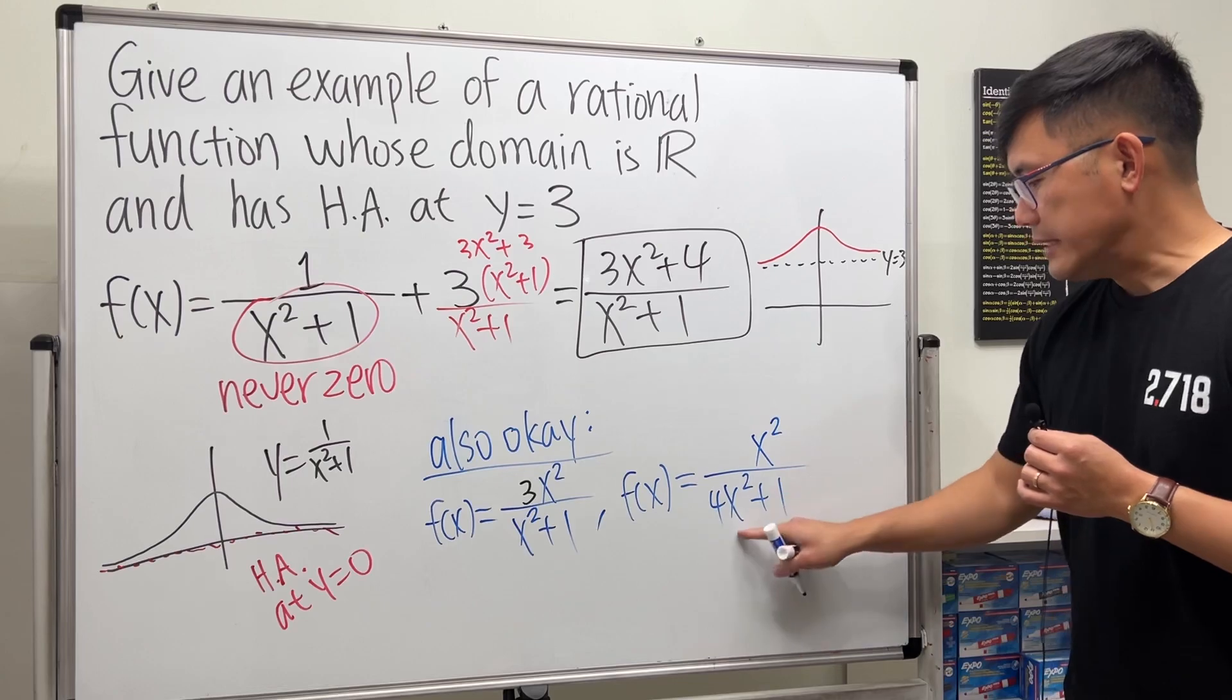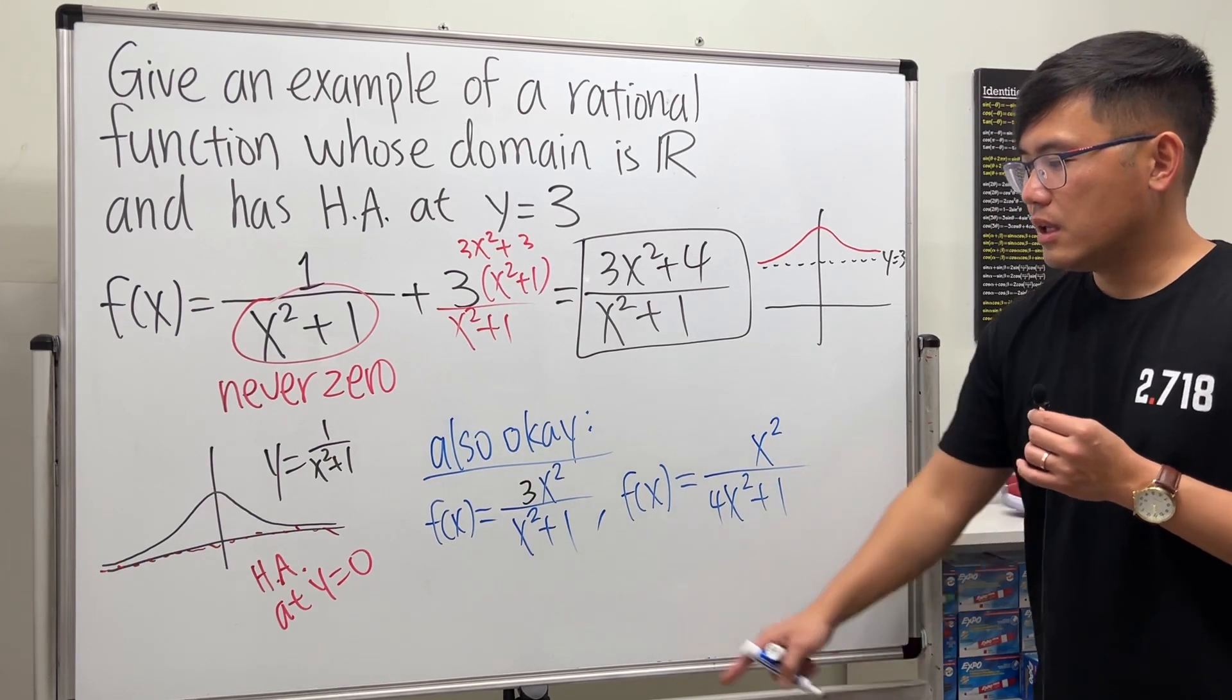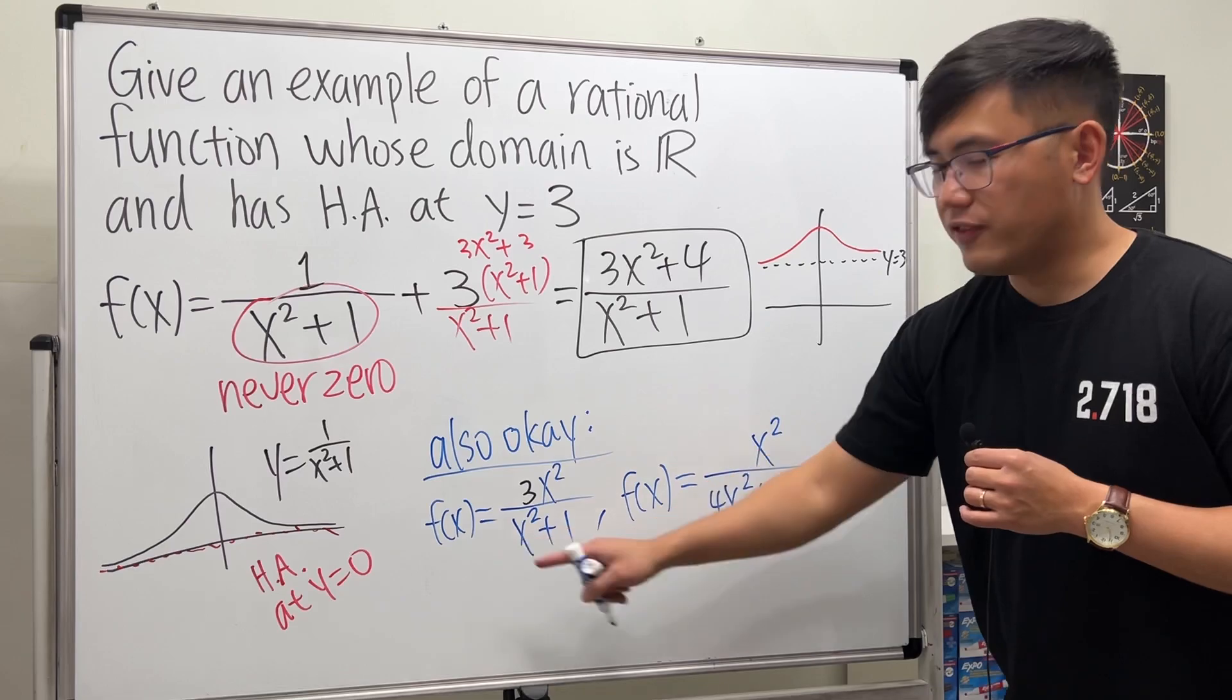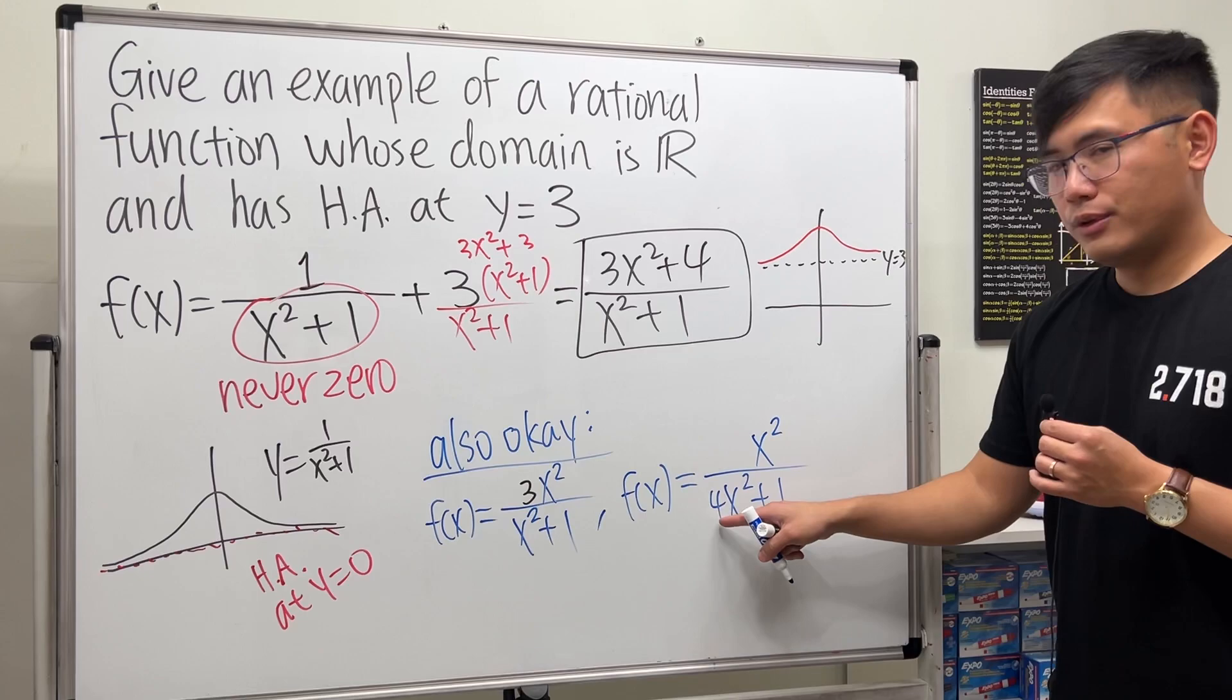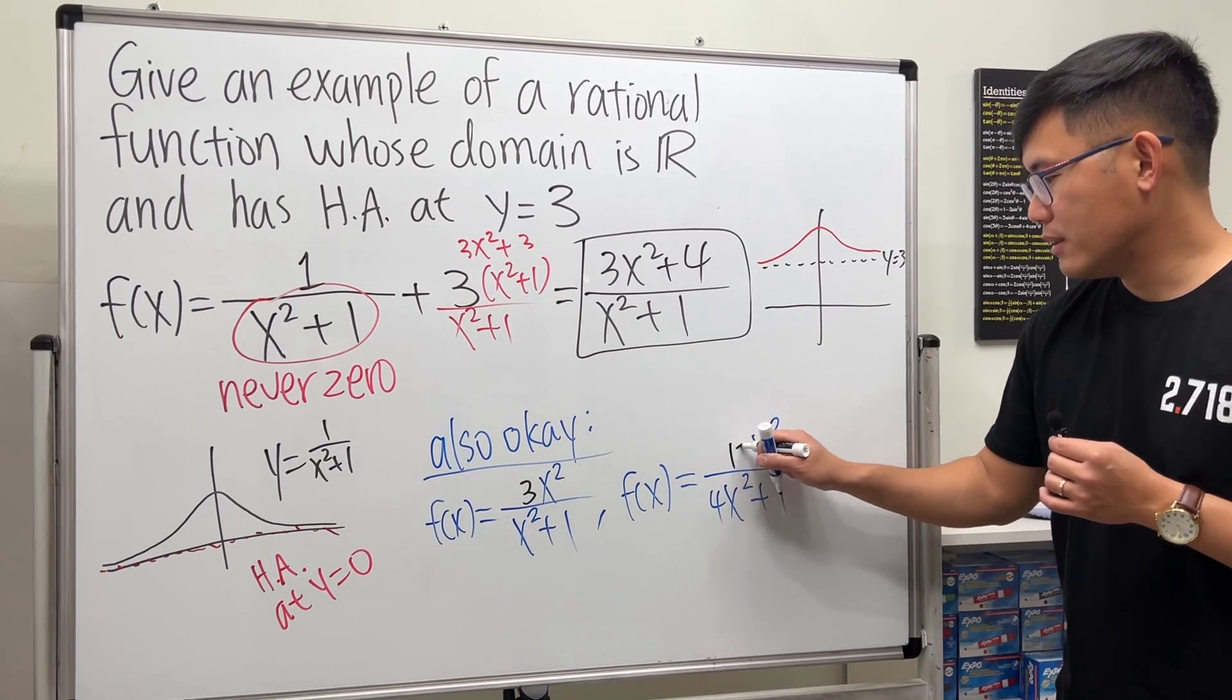Let's say you want to put a 4 here. Then in that case, what do we do on the top? Again, same degree, so you can just look at the coefficients. Earlier it's pretty much 3 divided by 1.